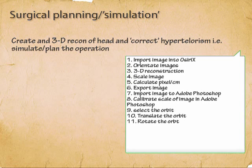This tutorial takes you through a number of steps. The steps include importing the image into OSRx, orientating the image — this is adjusting the gantry using a plugin — 3D reconstruction, and scaling the image, meaning you need to know what the scale of the image is. This is something you can achieve yourself by calculating the pixel per centimeter ratio.